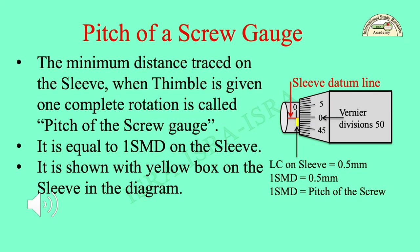The minimum distance traced on the sleeve when the thimble is given one complete rotation is called the Pitch of a Screw Gauge. It is equal to 1 SMD (smallest main division) on the sleeve, shown with a yellow box on the sleeve in the diagram.